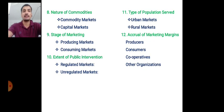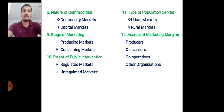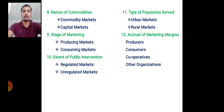The eighth classification is based on nature of commodities, which includes commodity market and capital market. A commodity market is one where different commodities such as food, grains, or fruits are traded. A capital market is related to the share market and money. The ninth classification is based on stage of marketing: producing markets and consuming markets. The tenth classification is based on extent of public intervention: regulated markets, which follow rules and are controlled by an authority, and unregulated markets, where no authority control or rules exist.